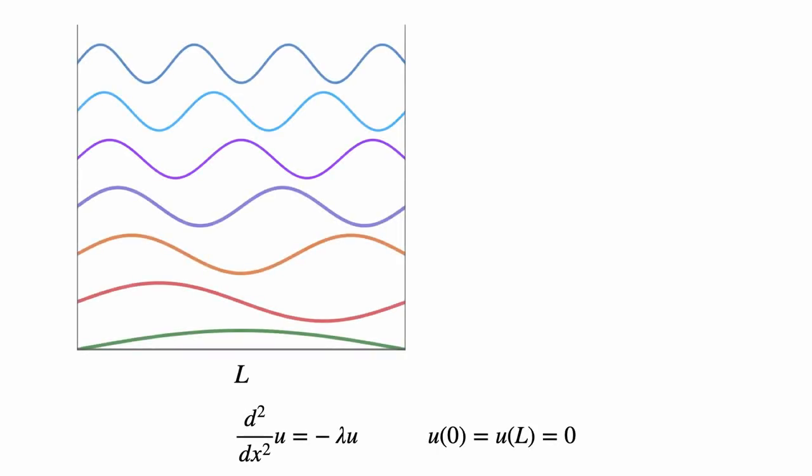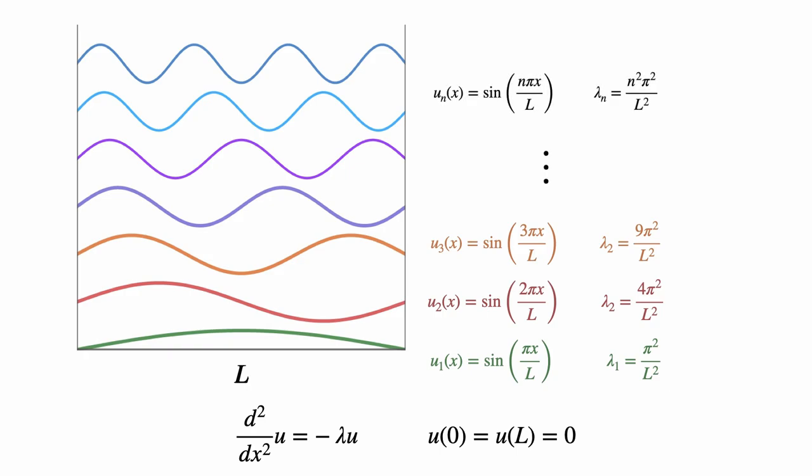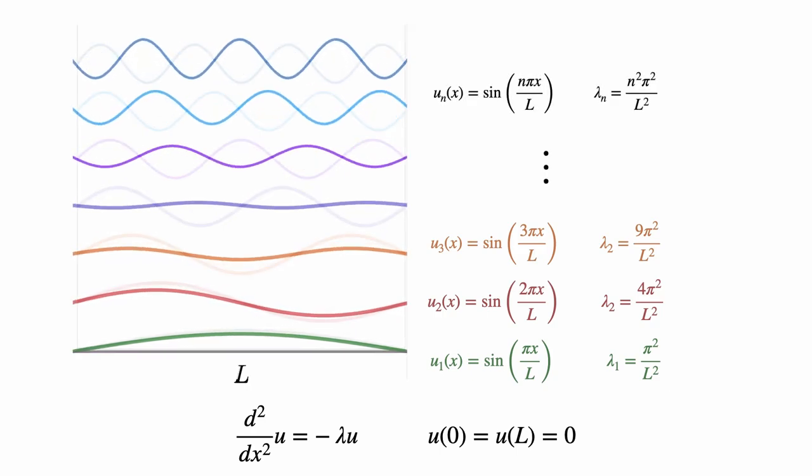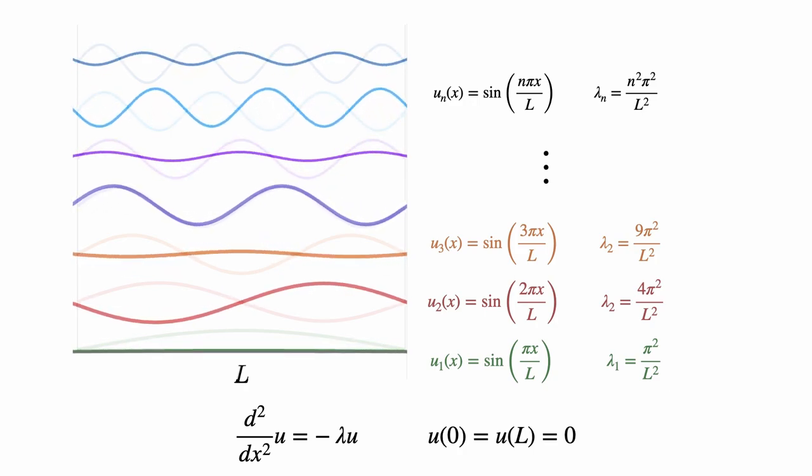For a one-dimensional string, we can solve for the eigenfunctions and eigenvalues explicitly. They're given by trigonometric functions, where L is the length of the string, and N is just a number: one, two, three, and so forth.